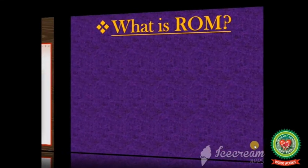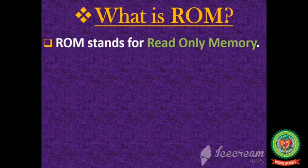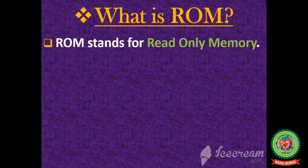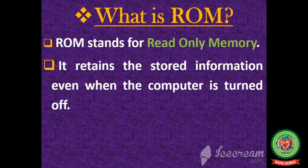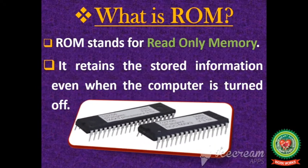Next is ROM. ROM stands for Read Only Memory, meaning the data and instructions stored in ROM cannot be changed but can only be read. It retains the stored information even when the power is switched off or when the computer is turned off. This is what a ROM chip looks like.